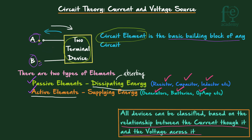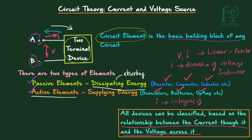We can classify all elements based on the relationship between the current through it and the voltage across it. For example, if the voltage-current relationship is linear, then we can say that it is a resistor. If the current is the derivative of voltage, then that device is an inductor. If current is the integral of voltage, then it is a capacitor.